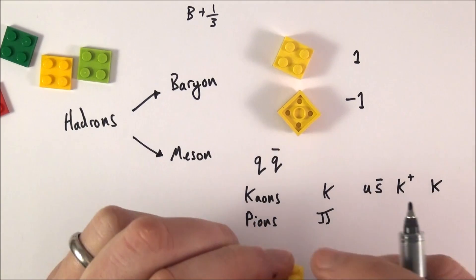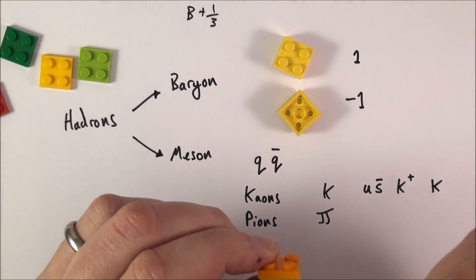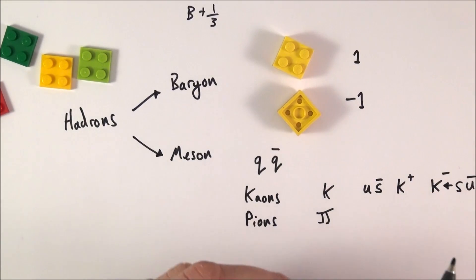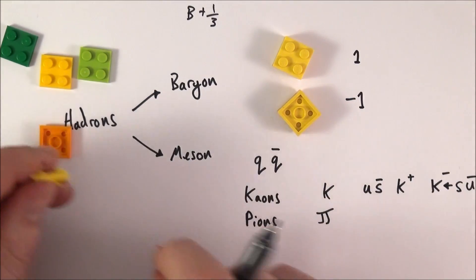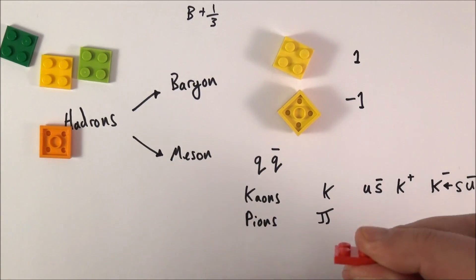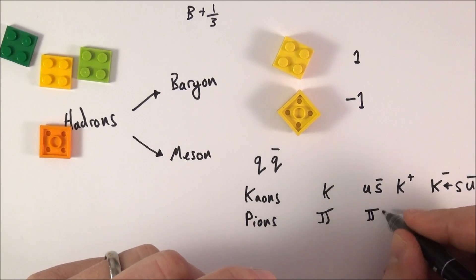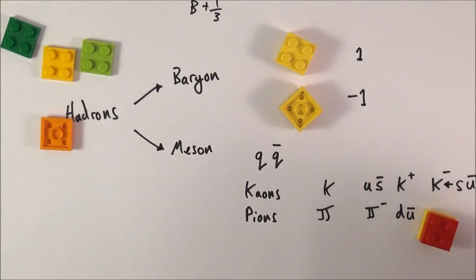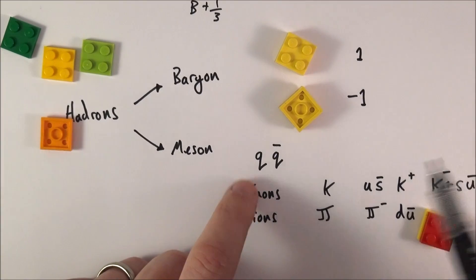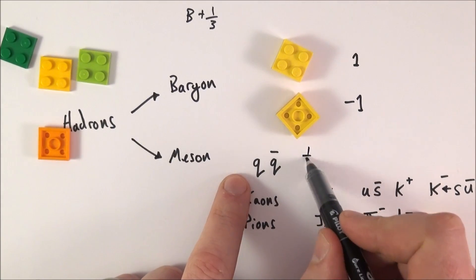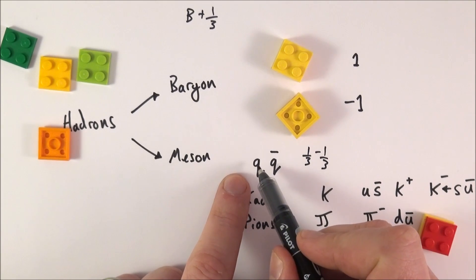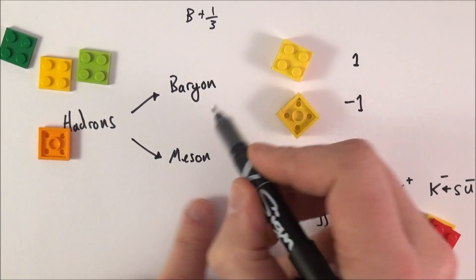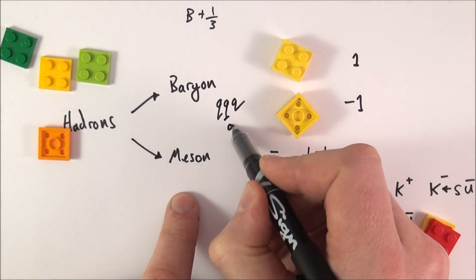You might also have a strange quark and an anti-up, which makes a K-minus. Or a down quark and an anti-up, which makes a π-minus. There are lots of different particles, but the key point is that a meson is made out of a quark and an antiquark. Therefore its baryon number is one-third minus one-third, which equals zero — because it is not a baryon. Baryons are made out of either three quarks or three antiquarks.